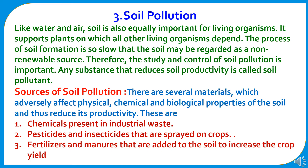The third type of pollution is soil pollution. Like water and air, soil is also equally important for living organisms. It supports plants on which all other living organisms depend. The process of soil formation is so slow that soil may be regarded as a non-renewable source; therefore, the study and control of soil pollution is important. Any substance that reduces soil productivity is called a soil pollutant. Sources of soil pollution include chemicals in industrial wastes, pesticides and insecticides spread on crops, and fertilizers and manures added to the soil.